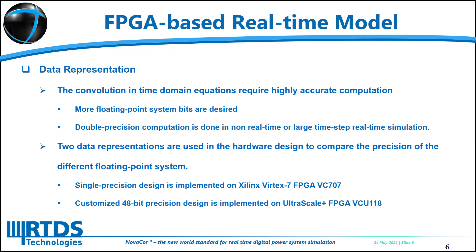Before implementing any application in a digital system, the data representation is always the first consideration, since it affects the accuracy of the computation and the hardware resource utilization. For a frequency-dependent line model, the convolution requires highly accurate computation and more floating-point system bits are desired. In non-real-time and large timestep real-time simulation, the computations are done in double-precision floating-point to guarantee accurate computation. However, on FPGA, due to hardware resource constraints and the restriction of timestep size, the implementation of a double-precision model is very difficult.